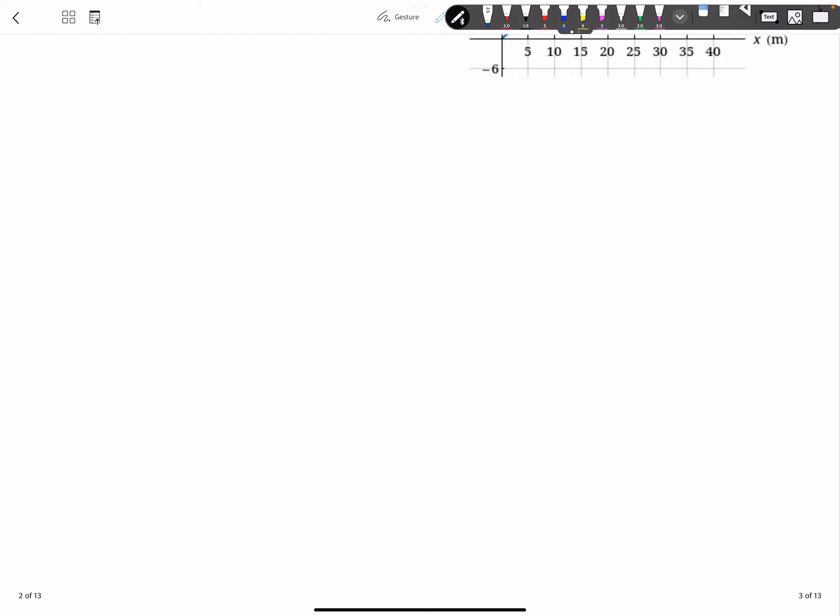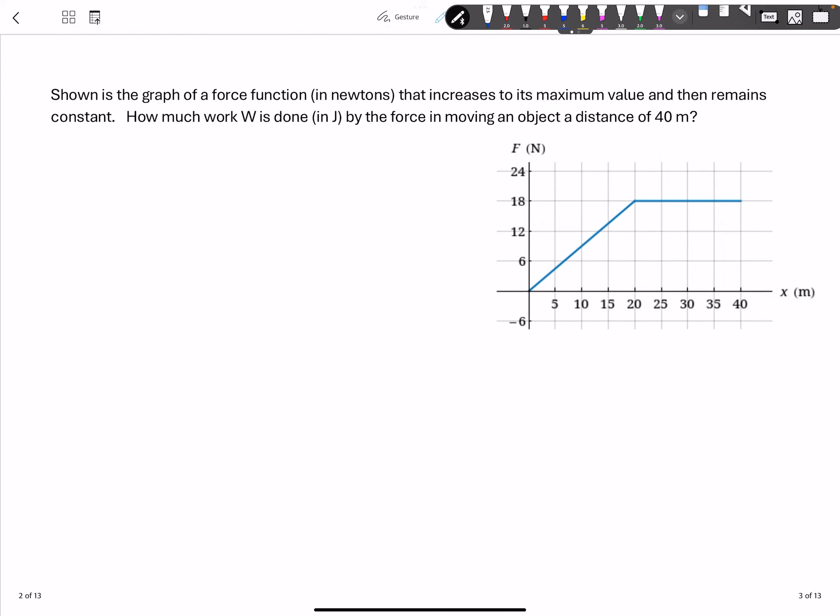All right, the next problem is asking the following. Shown is the graph of a force function in Newtons that increases to its maximum value and then remains constant. How much work is done in joules by the force moving an object a distance of 40 meters.